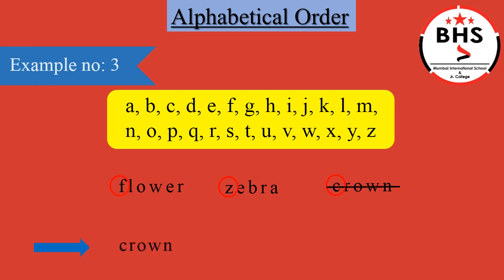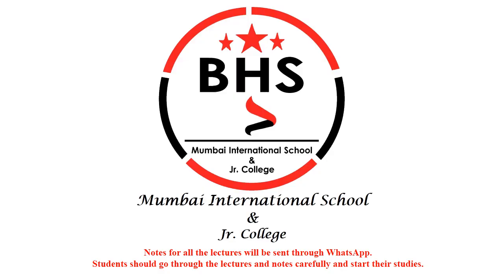Now, the letters left are F and Z. Children, from these two letters, which letter comes first in A to Z? F or Z? Yes, F. We have a word flower, which is starting with F. Our last letter is Z. We have a word zebra, which is starting with Z. Today, we have learned alphabetical order.